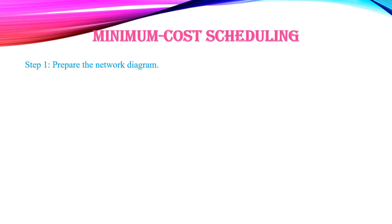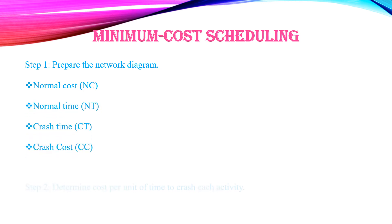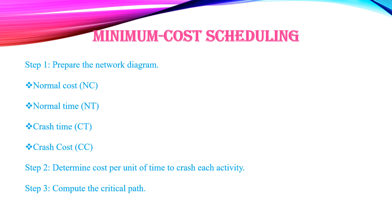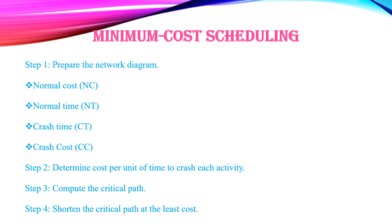For minimum cost scheduling: Step 1 — Prepare the network diagram with normal cost, normal time, crash time, and crash cost. Step 2 — Determine the cost per unit of time to crash each activity. Step 3 — Compute the critical path. Step 4 — Shorten the critical path at the least cost. This is the simple procedure adopted in project crashing or minimum cost scheduling.